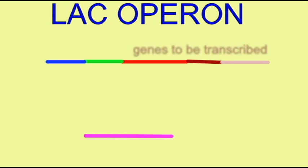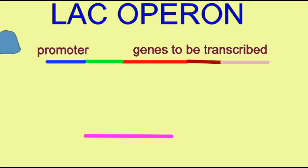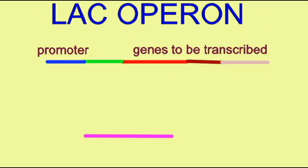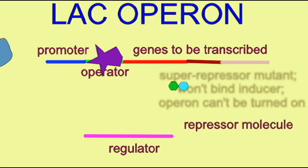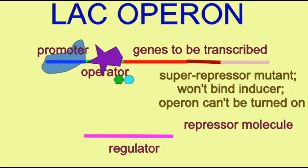Some mutations of the regulator gene result in repressor molecules which can't bind to the inducer molecule lactose. So in other words, once the repressor has bound the operator, the inducer cannot remove it. So these operons are turned off and can't be turned on. This is inefficient if the bacteria require a source of energy and lactose is present, because these bacteria would not be able to produce the gene products which would metabolize lactose.